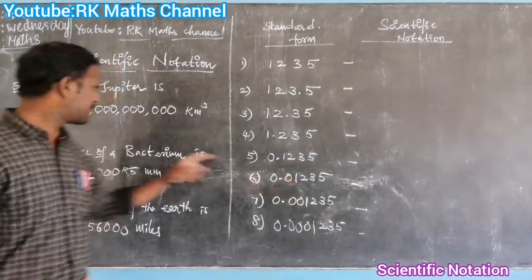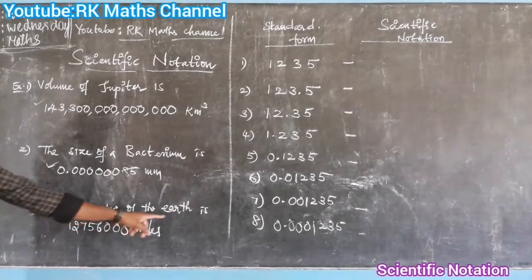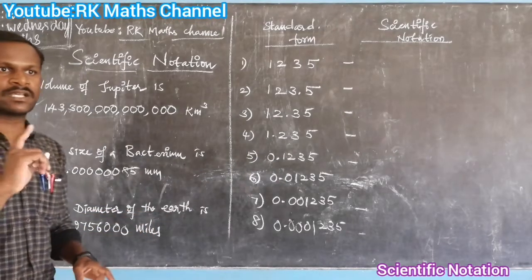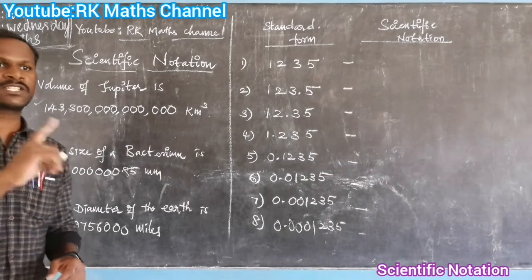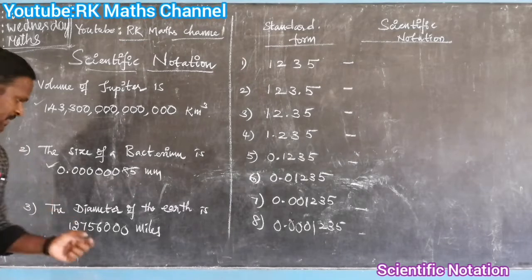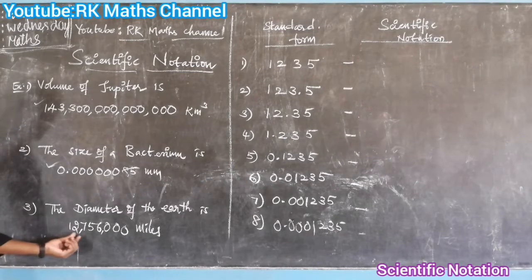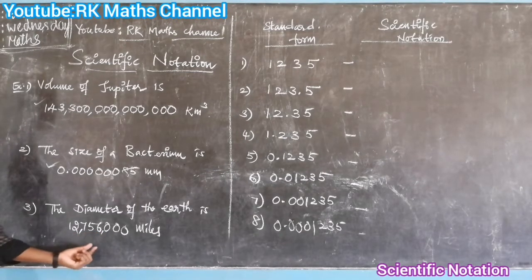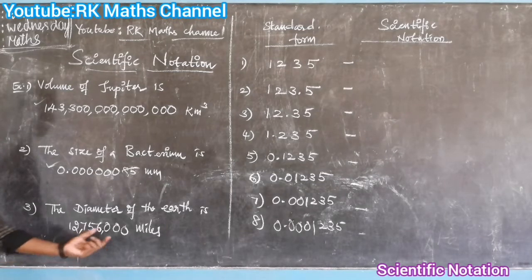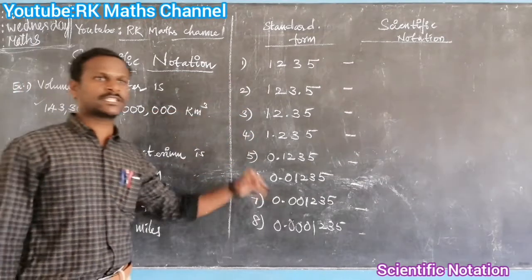First, we know what we need to do. But if we look at this — the diameter of the Earth. If we look at the Earth, the diameter — it's not a sphere shape. If the diameter needs to be measured, it's the diameter line. The diameter is 12,756,000. So between this 12,756,000, we have to move the decimal point. We have to make the diameter in scientific notation — more simple.